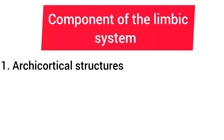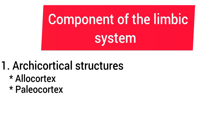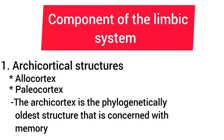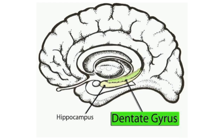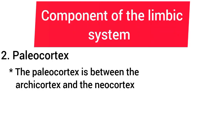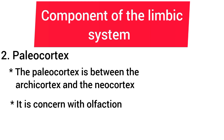The archicortex forms the allocortex along with the paleocortex. The archicortex is the phylogenetically older structure and is concerned with memory. The archicortical structures consist of the hippocampus and the dentate gyrus. The paleocortex is in between the archicortex and the neocortex, and it is usually concerned with olfaction.